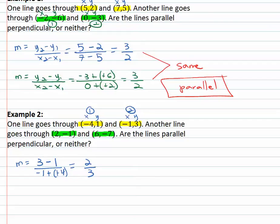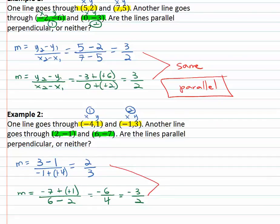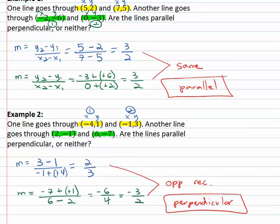The second line goes through (2, −1) and (6, −7). Slope = y₂ = −7 minus y₁ = −1 over x₂ = 6 minus x₁ = 2. Negative seven plus one is negative six; six minus two is four. Reducing the fraction gives negative three-halves. Comparing two-thirds and negative three-halves: they are opposite reciprocals, which means these lines are perpendicular — meeting at a perfect ninety degree angle.